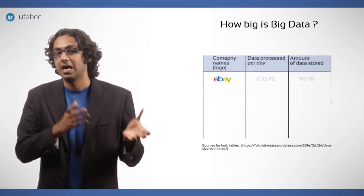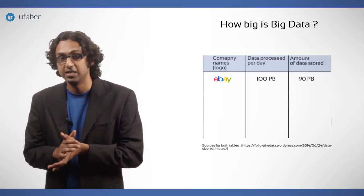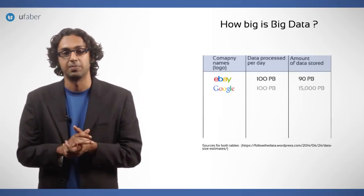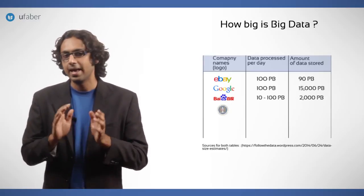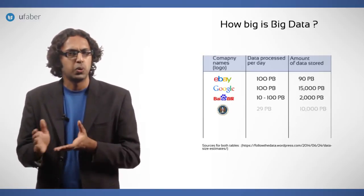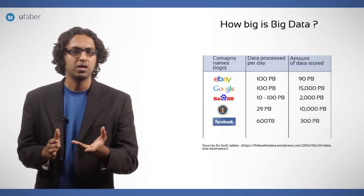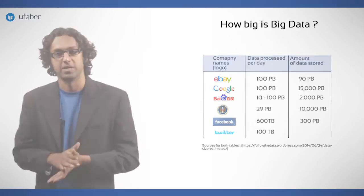eBay processes 100 petabytes of data. Google again processes 100 petabytes. Baidu, which is a Chinese web service company, NSA uses about 29 petabytes. Facebook 600 terabytes. Twitter 100 terabytes.